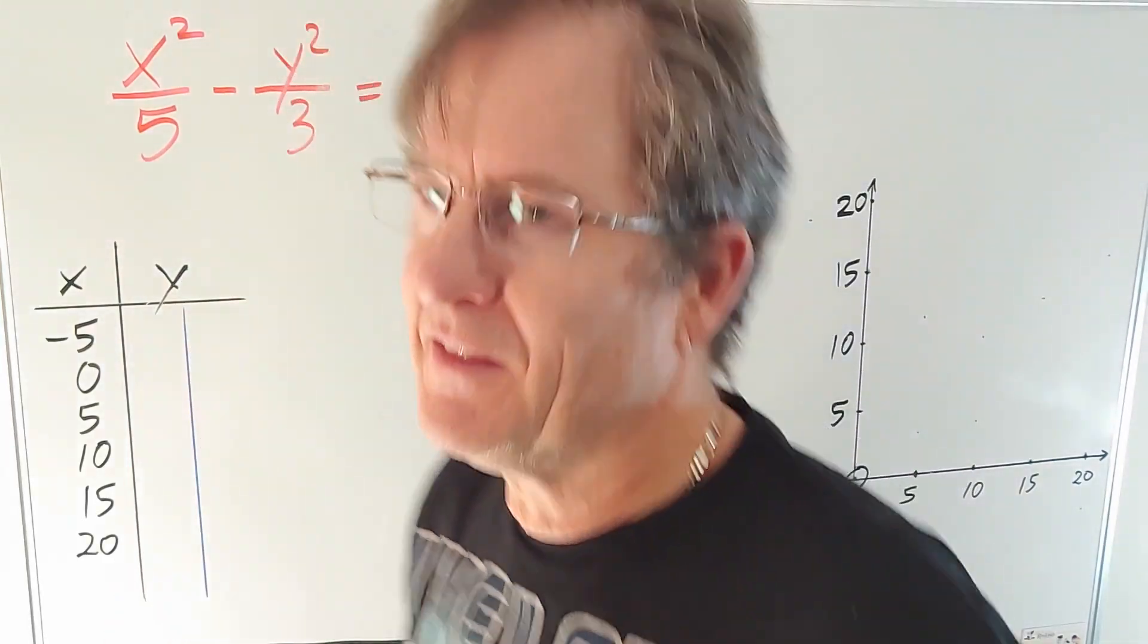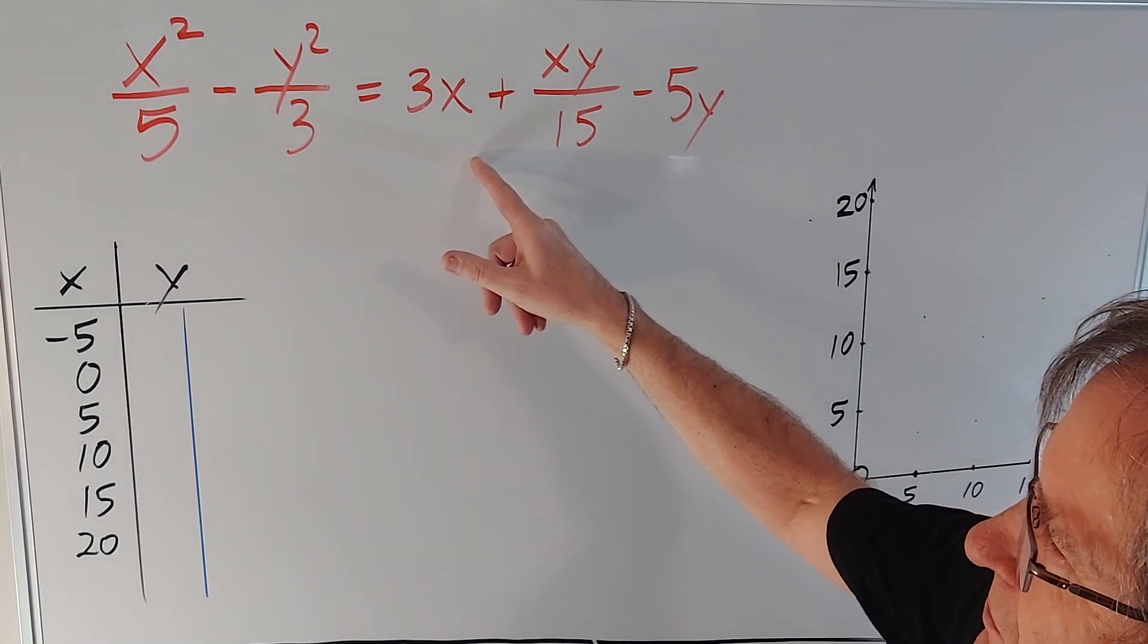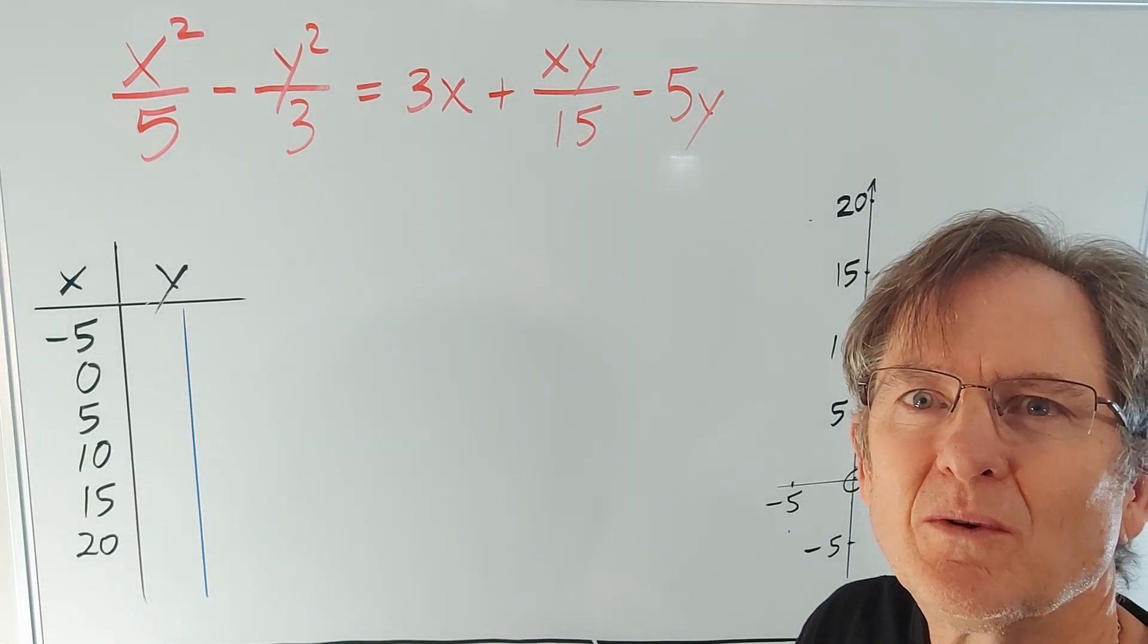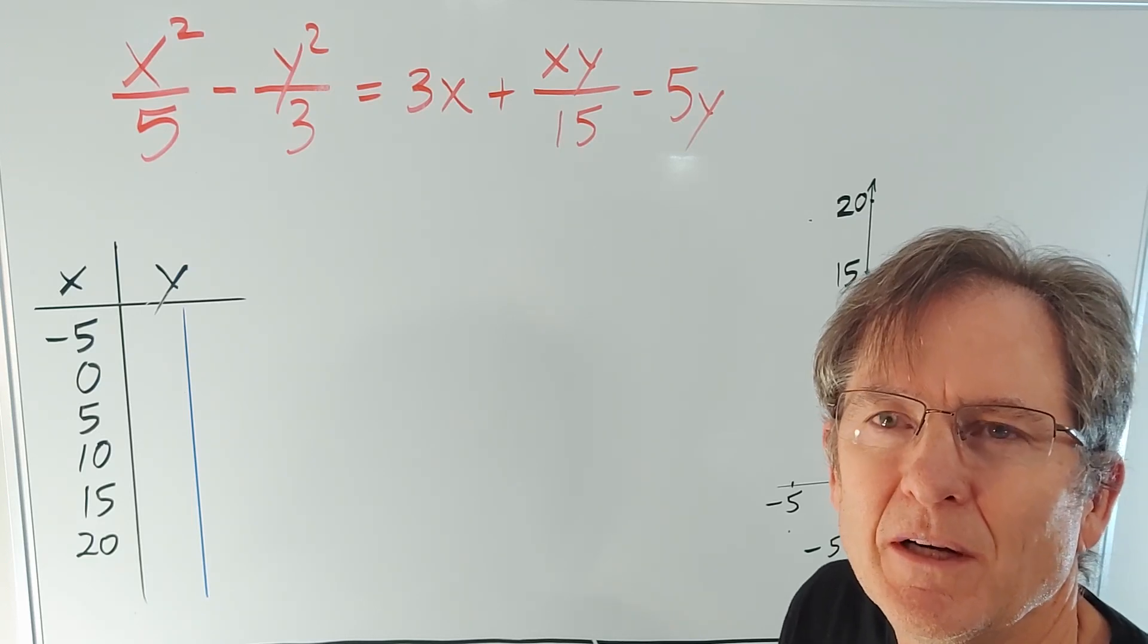Today I want to look at this quadratic relation. Quadratic because it has a couple of square terms in it. What would the graph of that look like? Any bright ideas?